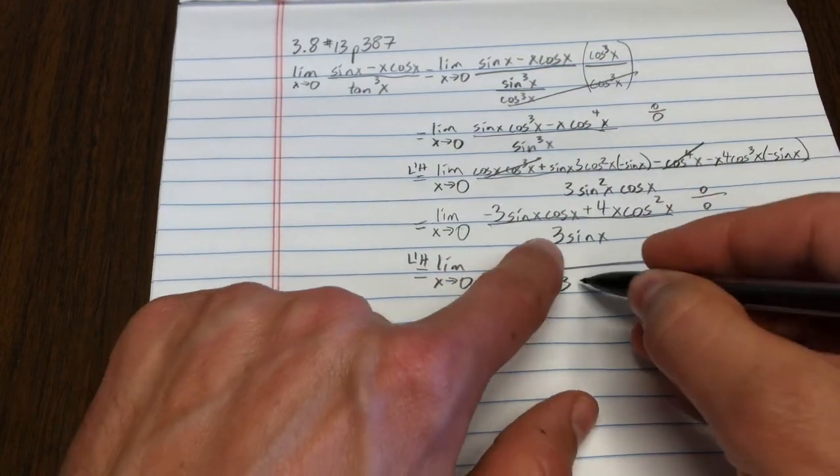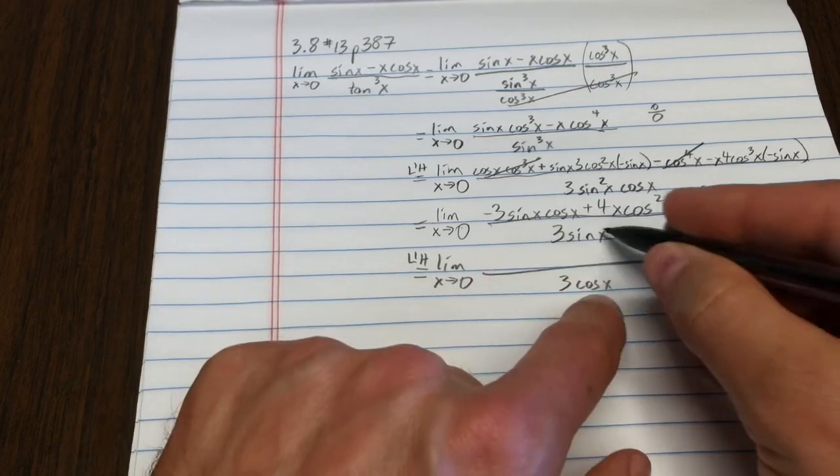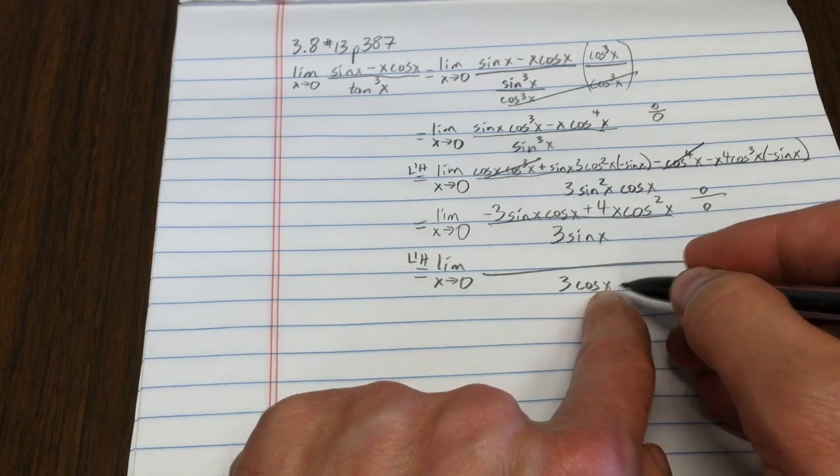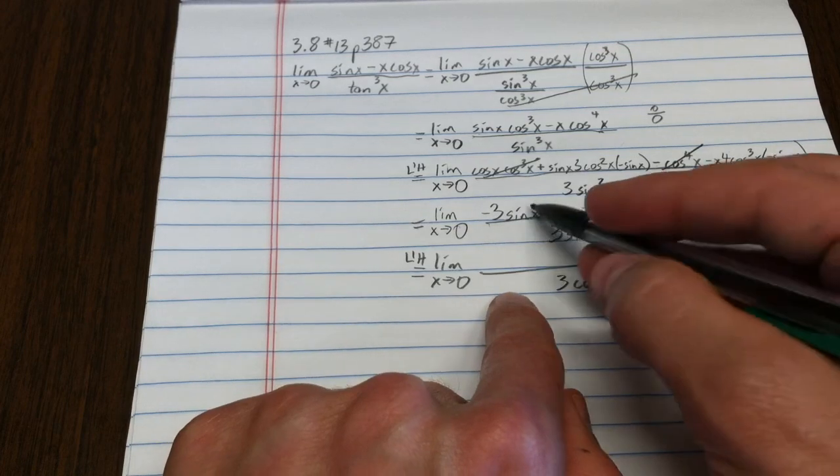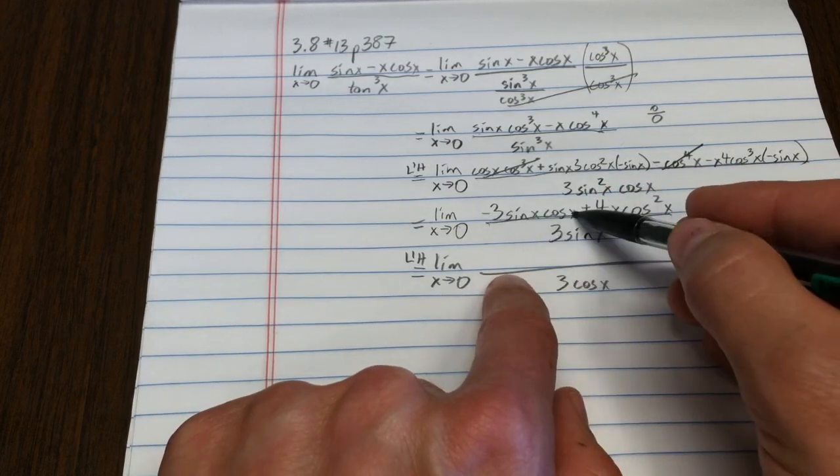My justification for that is not the numerator, but the denominator. The derivative there will be 3 cosine x. I know that's not going to be zero as x goes to zero. That bodes well for being done after this step.